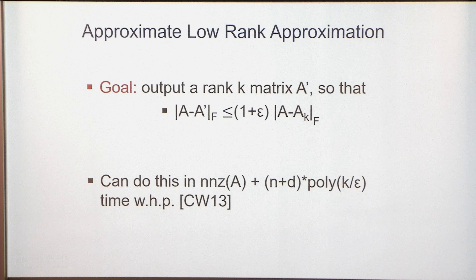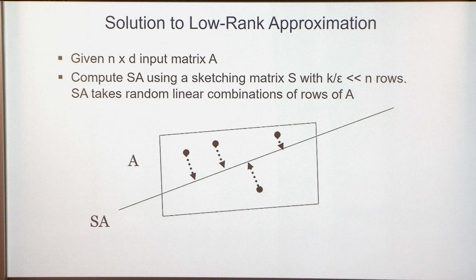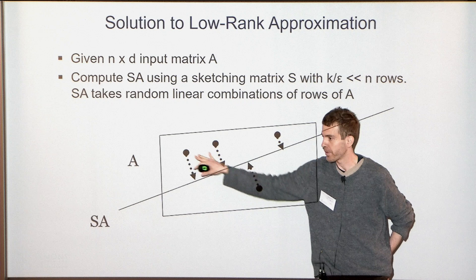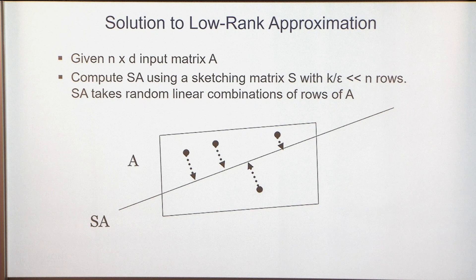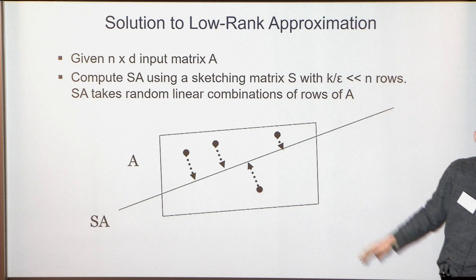Stop me at any point if there are questions. Let me go over roughly how you use a technique called sketching to achieve algorithms running in time proportional to the number of nonzero entries of A. We're given this N by D input matrix A, and think of the rows as N points in R^D. The first step is to choose a random matrix S — a very wide fat matrix with roughly K/ε rows and N columns.